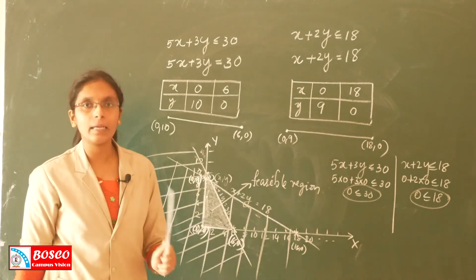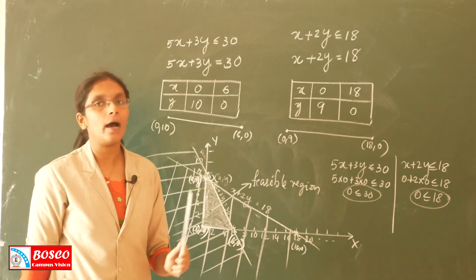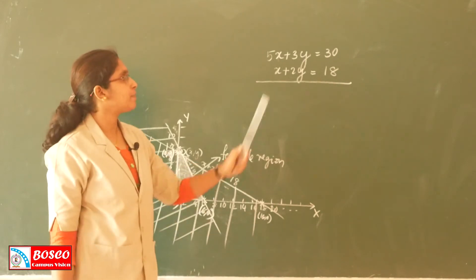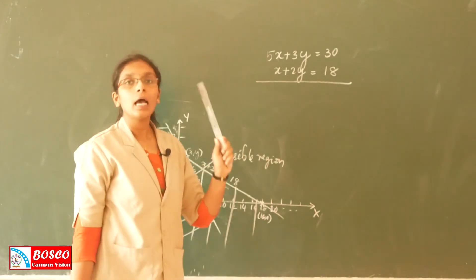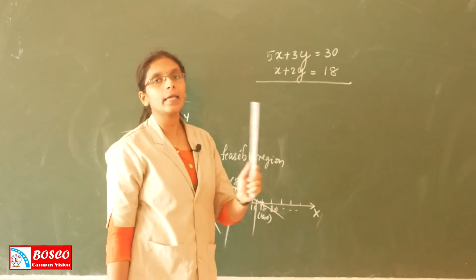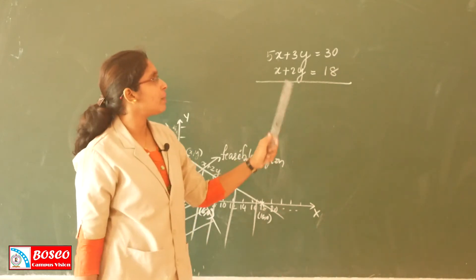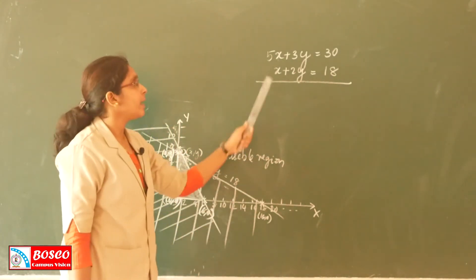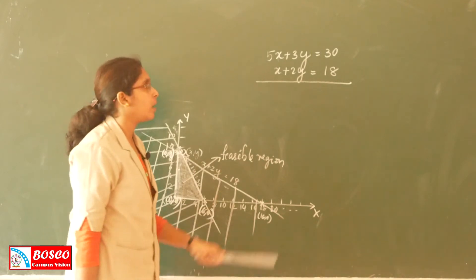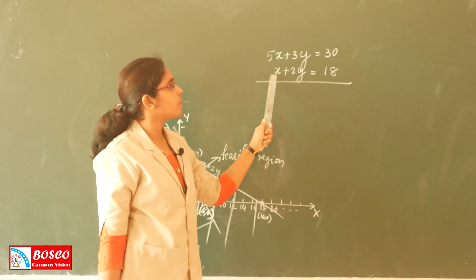To find the fourth vertex, we solve the two line segment equations simultaneously: 5X plus 3Y equals 30 and X plus 2Y equals 18. To eliminate X, we multiply the second equation by 5 and subtract, solving for Y first, then substituting back to find X.